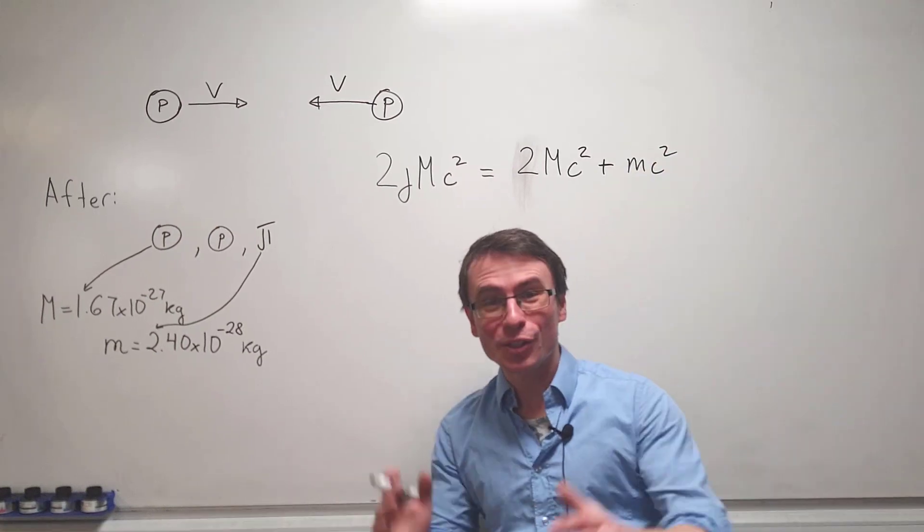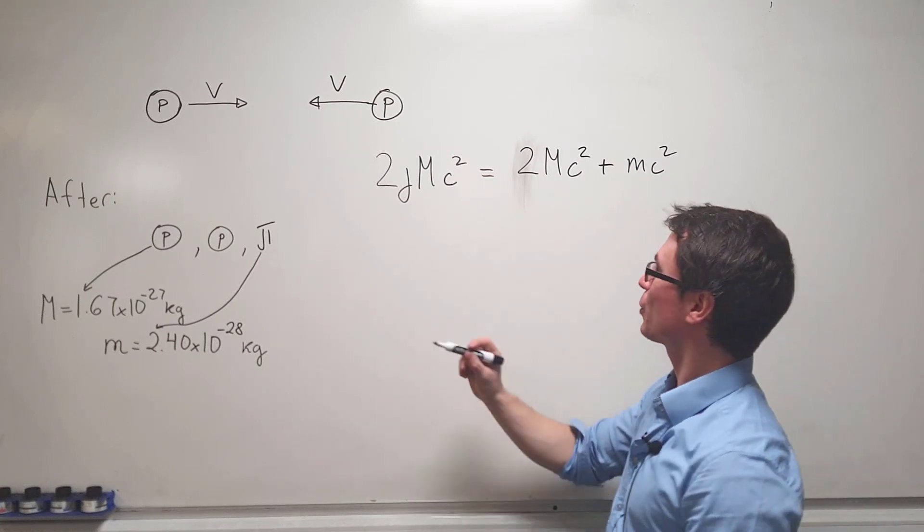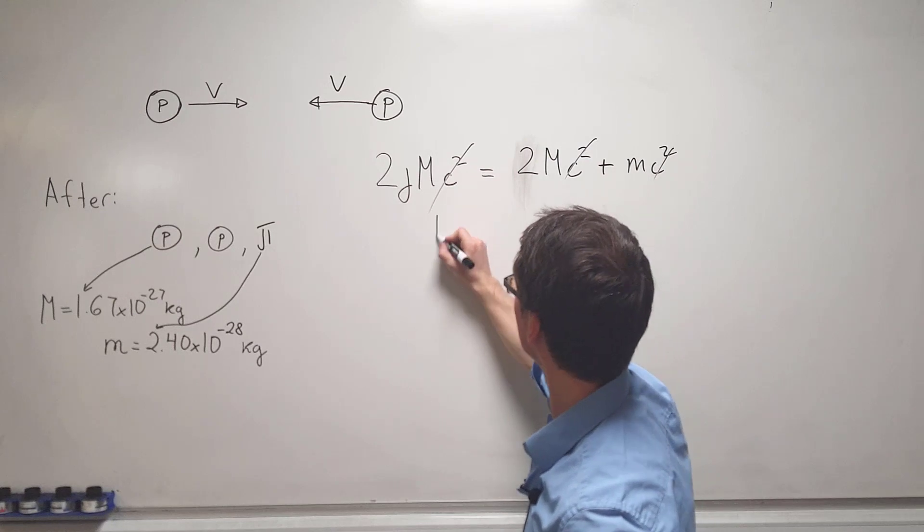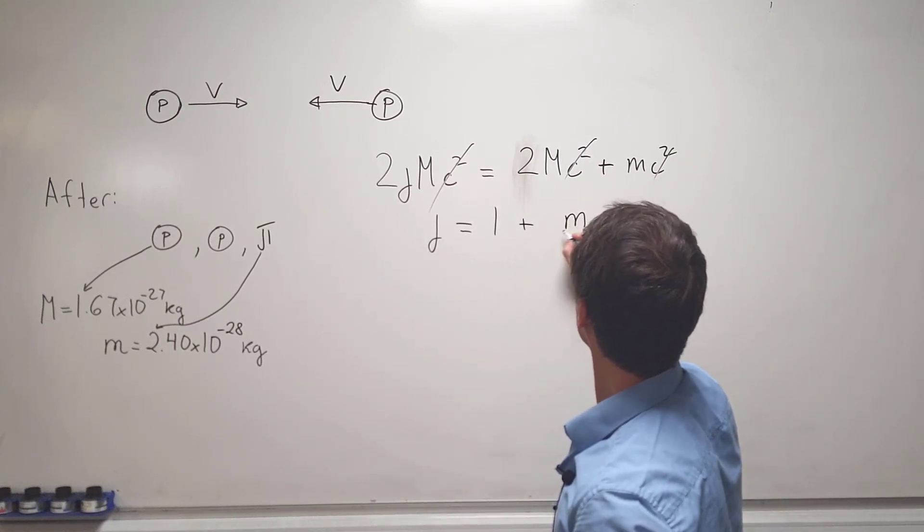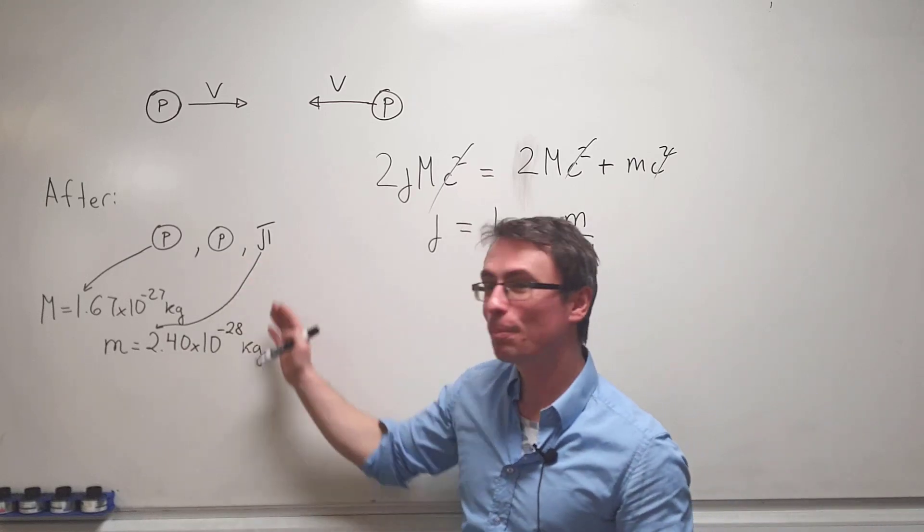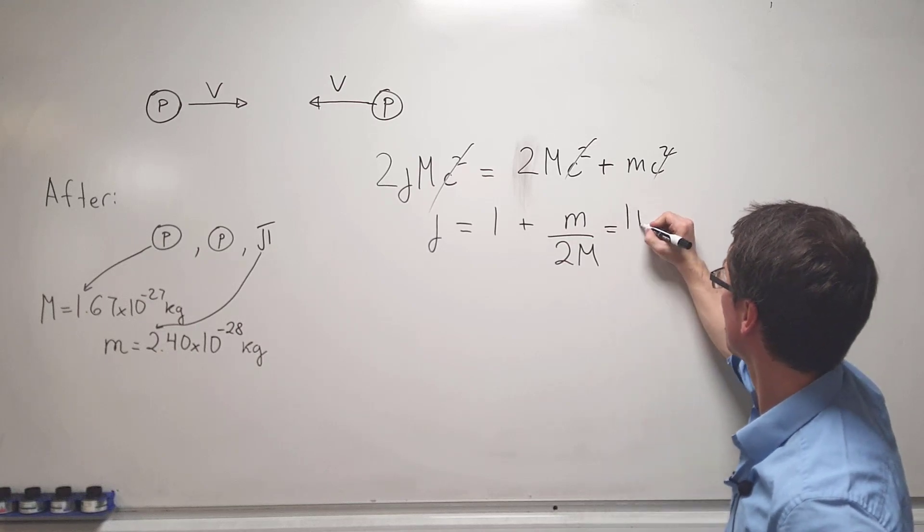Gamma being equal to one plus m divided by 2M. We're given the mass of both of these particles, so we can directly calculate our gamma factor.